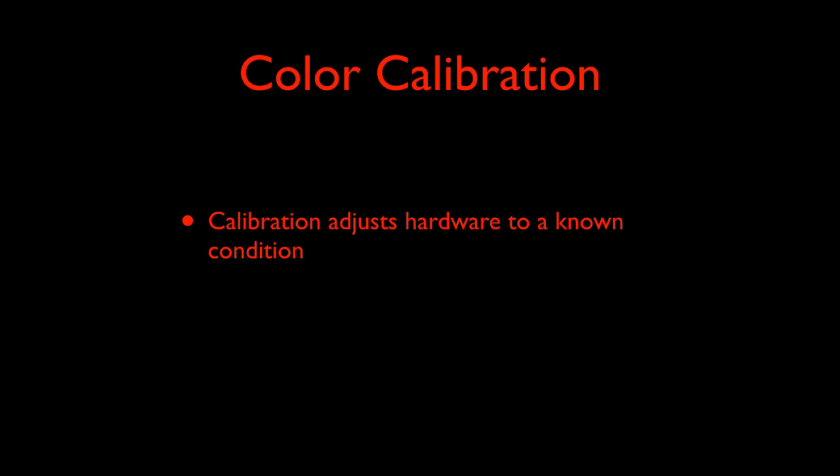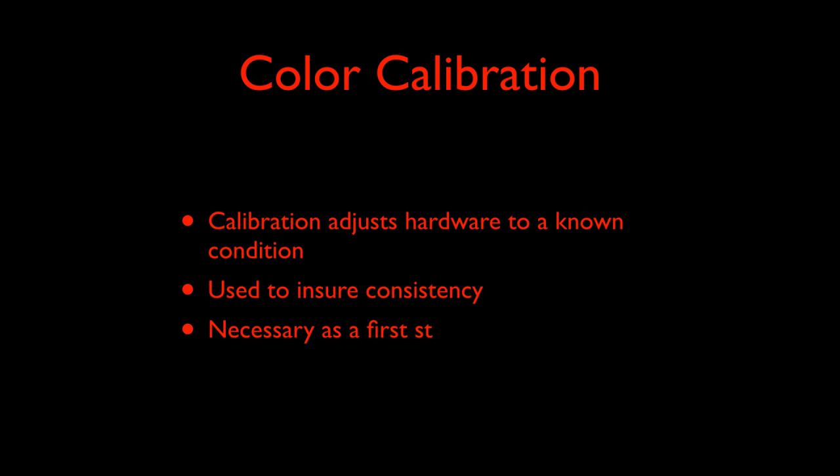Probably the biggest mistake is the idea that color management is the same thing as color calibration. Calibration is when we adjust some kind of hardware to a standard condition, like neutralizing the display so that it renders gray in a reasonably accurate way. This is used to ensure consistency and is necessary to make color management work, but it's actually not part of color management itself.